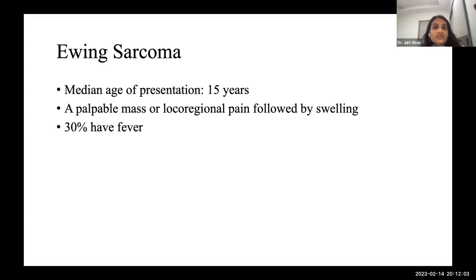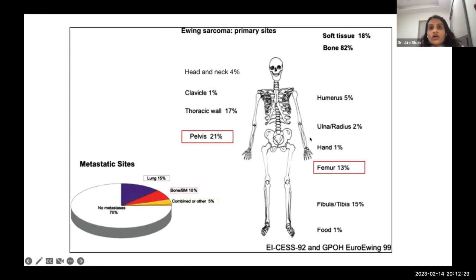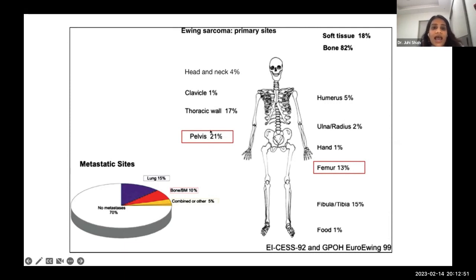The second most common round cell tumor is Ewing sarcoma. The median age of presentation is 15 years. It typically presents as a palpable mass or locoregional pain in the extremity followed by swelling indicating bone involvement; 30% of patients have fever. Eighty percent arise from bone and 20% from soft tissue. Common sites are the femur (distal femur and proximal tibia), pelvis (21%), and thoracic wall (17% — Askin tumors). Thirty percent have metastasis at presentation, with lung being most common (15%).